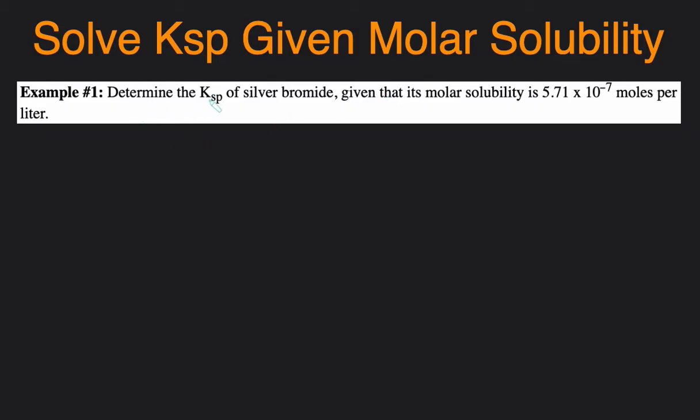So in our first example, we're asked to solve for the Ksp of silver bromide, given that its molar solubility is 5.71 times 10 to the negative 7 moles per liter. So for the full process, the very first step is to write the reaction of the solid dissociating. So we'll start with the formula of silver bromide. Silver is Ag with a positive 1 charge, and bromide is Br with a negative 1 charge. So silver bromide is just AgBr.